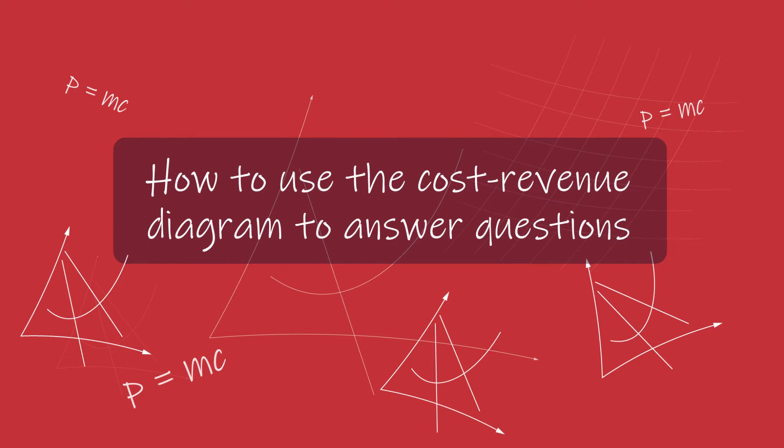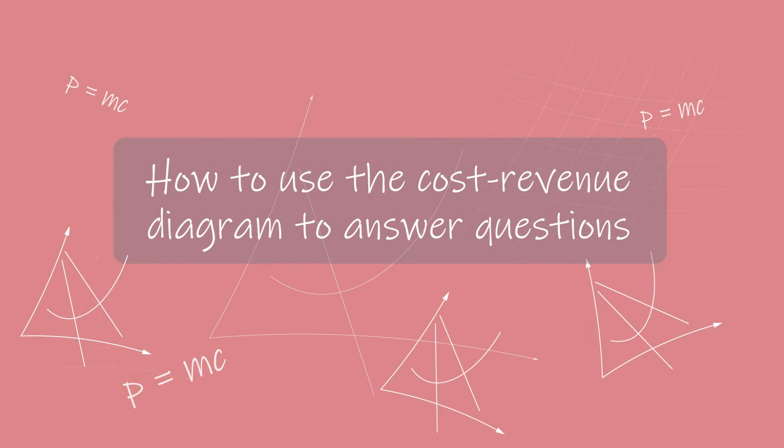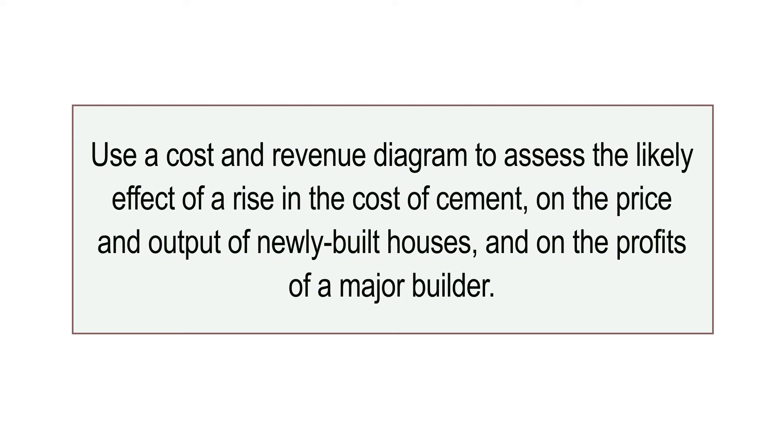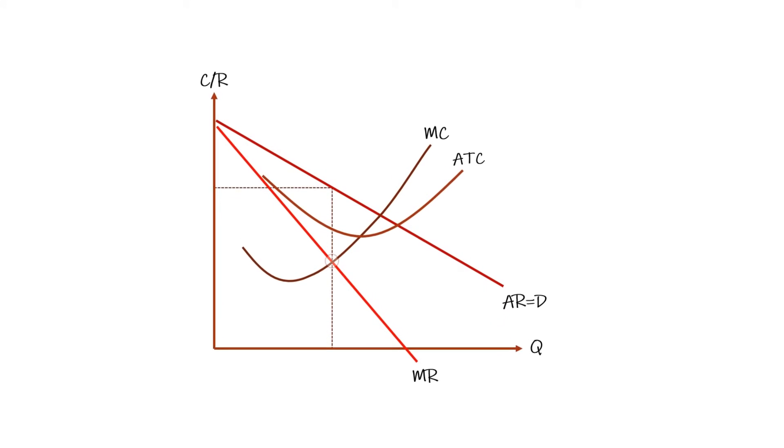How to use the cost and revenue diagram. Look at the following question: use a cost and revenue diagram to assess the likely effect of a rise in the cost of cement on the price and output of newly built houses and on the profits of a major builder. The cost and revenue diagram is the most effective way to explain the effects of a cost shock on a firm's price, its output, and profits.